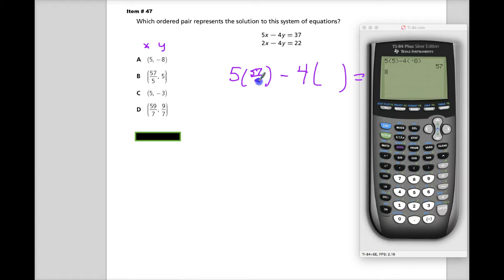57 over 5 and then 5. So let's try that one. 5 times 57 over 5. Once again, if it's on the line, it should be equal to 37. And that's looking pretty good. So maybe that's what they have in common. So now that that one worked, I can try the other one.